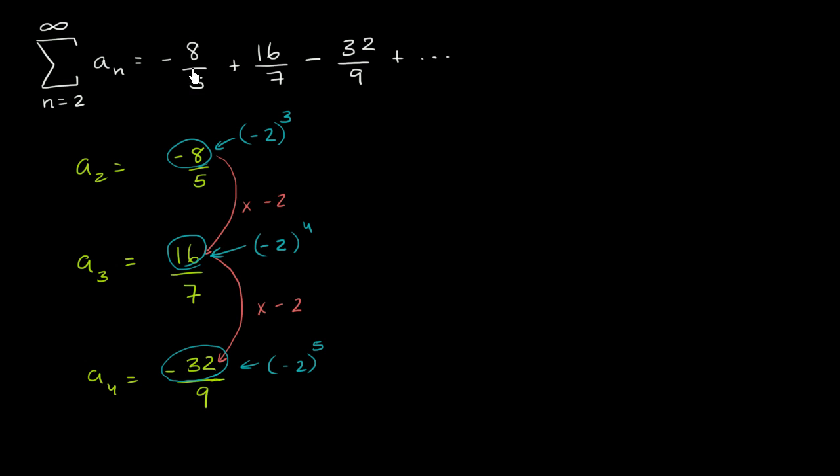So that gives a sense that at least the numerator is going to be whatever our index is. So let me write this down. So a sub n is equal to negative 2 to whatever index we're at, to that index plus 1 power. So that's one way to think, or that's a reasonable way to think about our numerator.